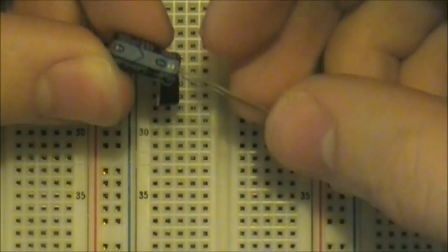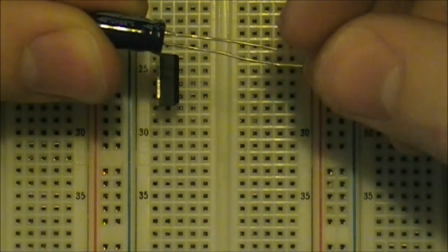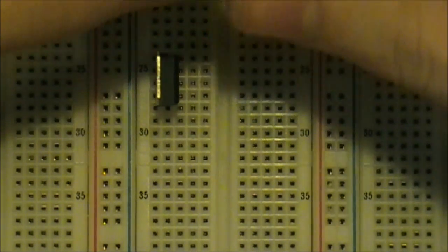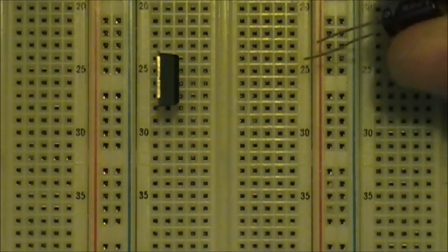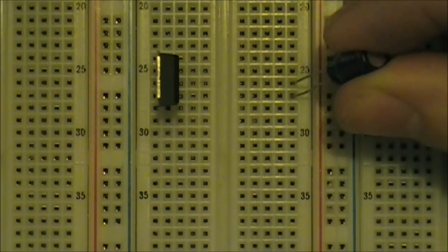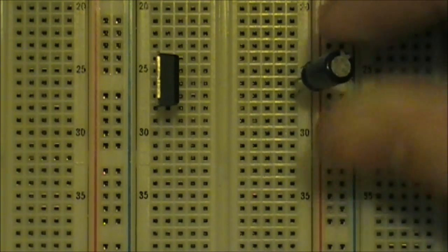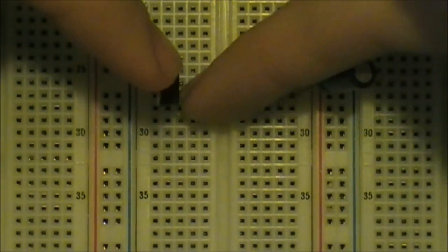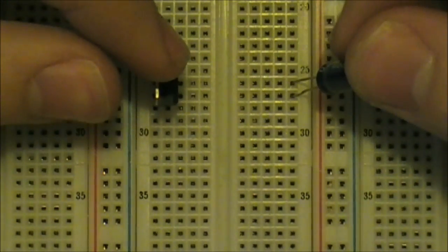This white line right there, and also this shorter lead, marks the negative side. So I'm going to go ahead and put it in right there. Again, these are not connected yet, because the channel is separating them, but we'll get to that in a minute.